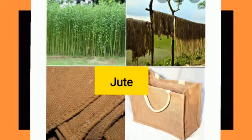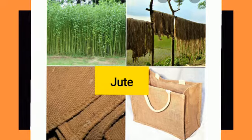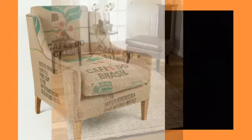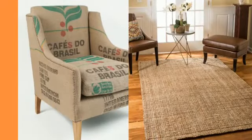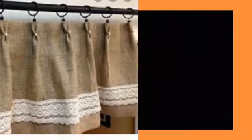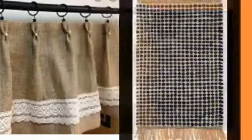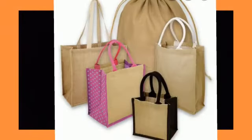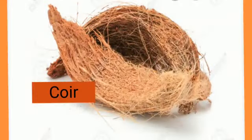Next is jute. Jute is obtained from the stem of the jute plant. It is used in making chair coverings, carpets, curtains, rugs, bags, etc.